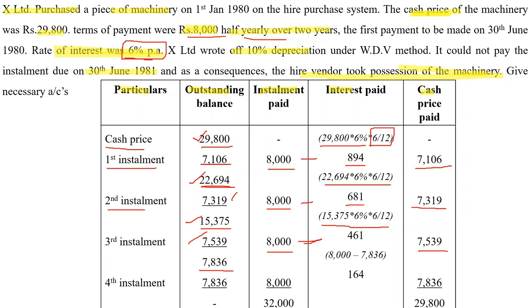The fourth installment is the last installment. For the last installment, instead of calculating the percentage, we deduct the outstanding balance directly. The interest amount is 164. Installment minus interest gives cash price paid, and after the last installment the outstanding balance becomes zero. The installment column gives the total hire purchase price of 32,000, and 29,800 is the cash price of the asset.